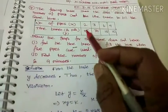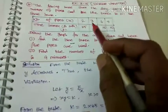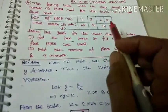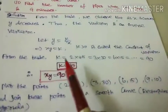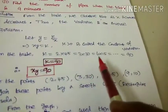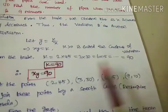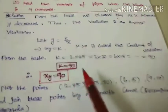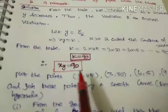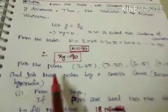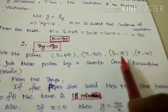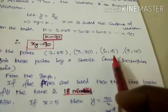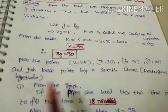From the table, k equals x times y: 2 × 45 = 90, 3 × 30 = 90, 6 × 15 = 90, 9 × 10 = 90. Therefore k equals 90, and xy equals 90. Now plot the points (2,45), (3,30), (6,15), (9,10) and join these points by a smooth curve.